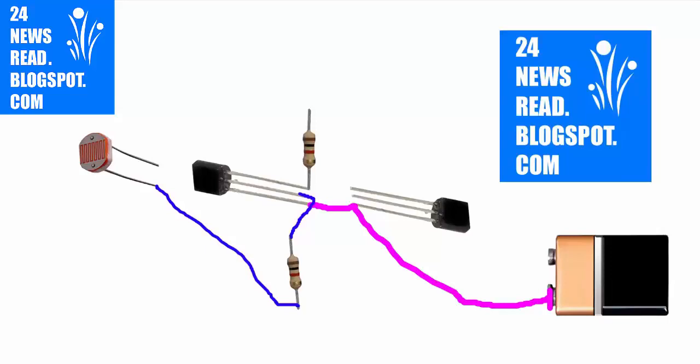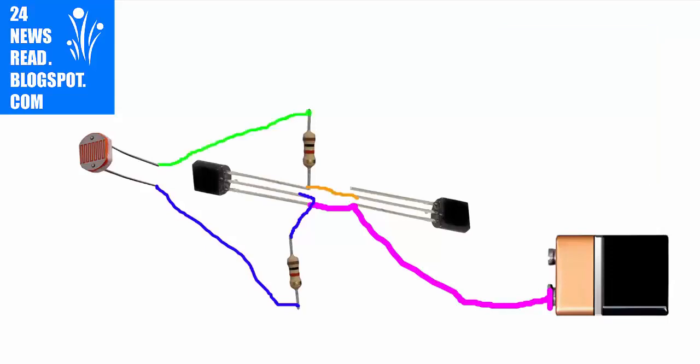Then join resistor and LDR. Join other resistor three number pin. Join red resistor and LDR. Now join red resistor and LED light. Join transistor three number pin and LED light. Join battery class position.